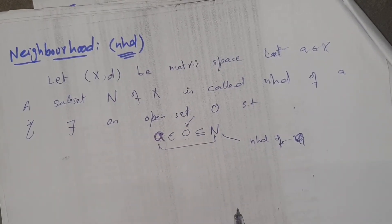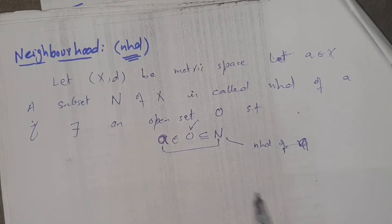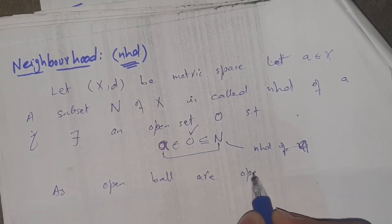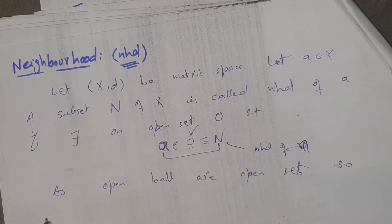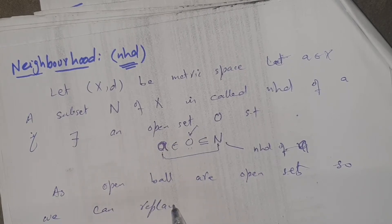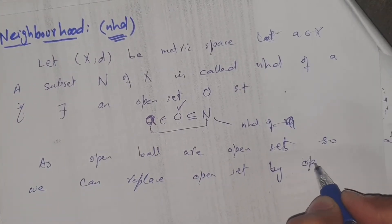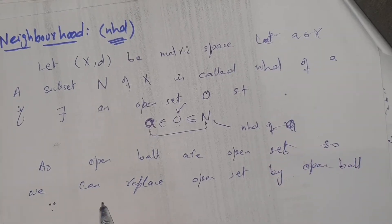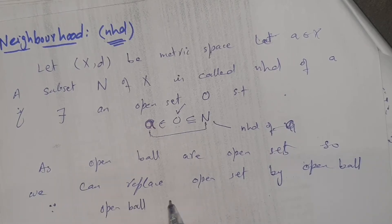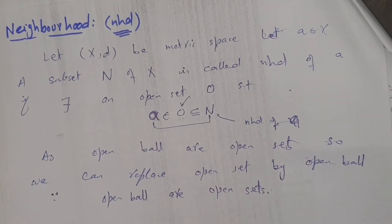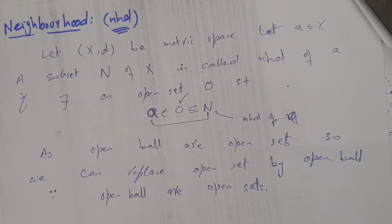Since open balls are open sets, we can replace 'open set' by 'open ball' in this definition, because open balls are open sets. So this is the definition of the neighborhood of an element.